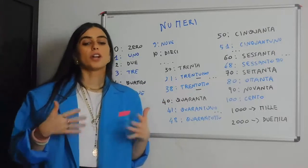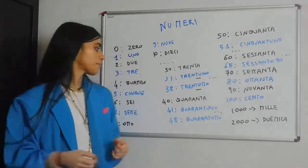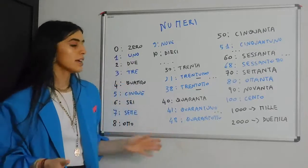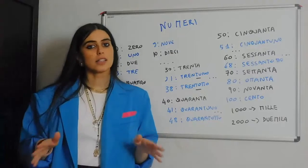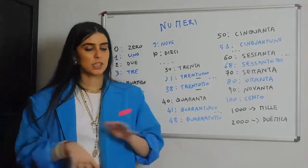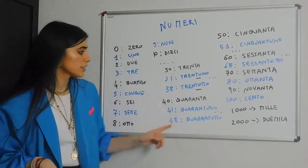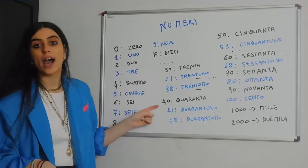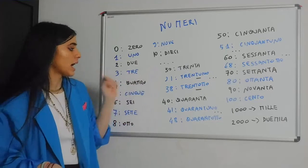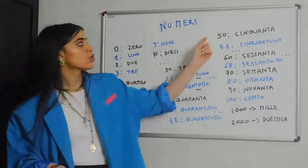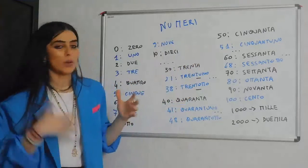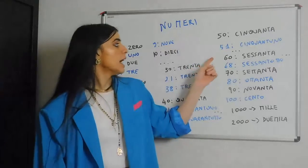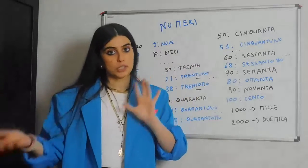Quaranta follows the same pattern: quarantuno, quarantotto, etc. This rule is going to last until 100 — there's no chance we eliminate this rule. So we have trenta, quaranta, cinquanta — with cinquantuno, cinquantotto, and cinquantatre, for instance, which is regular.